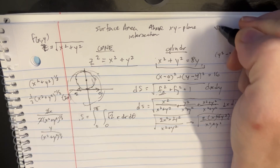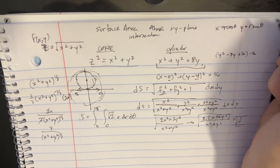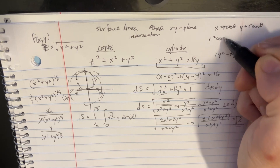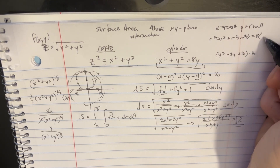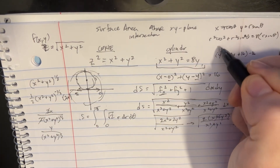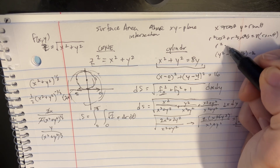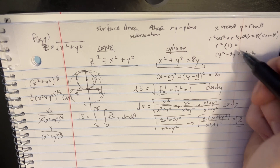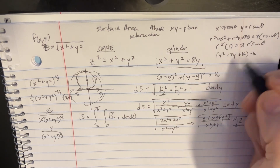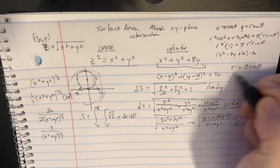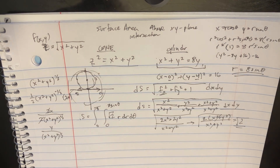For the r limits, we substitute x equals r cosθ and y equals r sinθ into the cylinder equation. We get r squared cosine squared θ plus r squared sine squared θ equals 8r sinθ. Since cosine squared plus sine squared equals 1, this becomes r squared equals 8r sinθ, so r equals 8 sinθ. That's our upper limit for r, going from 0 to 8 sinθ.